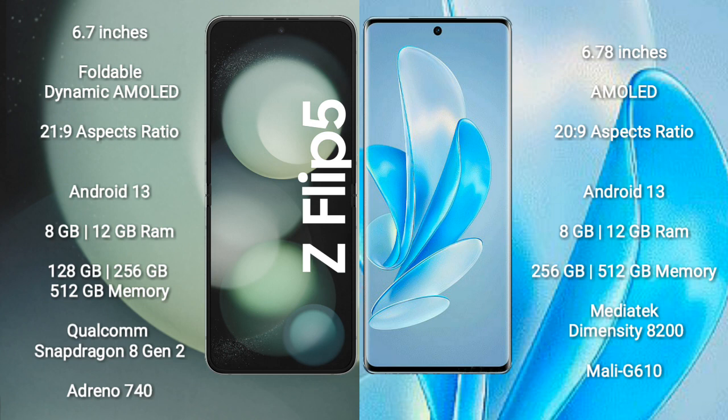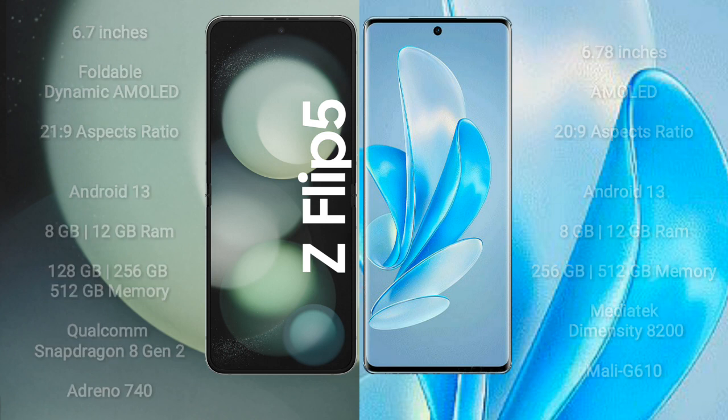The Vivo A70 Pro comes with 8GB or 12GB of RAM and 256GB internal storage. It is powered by a MediaTek Dimensity 8200 processor with GPU Mali-G76.